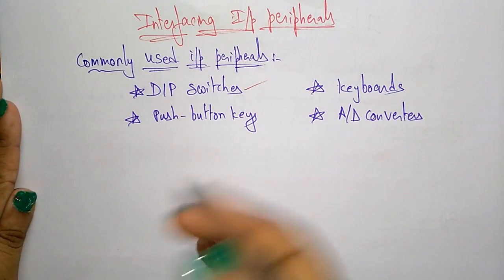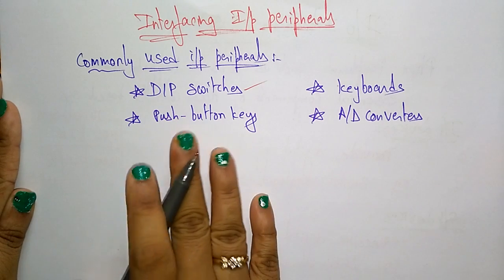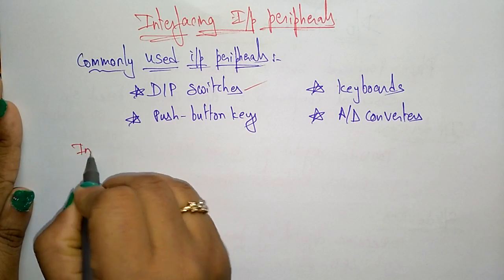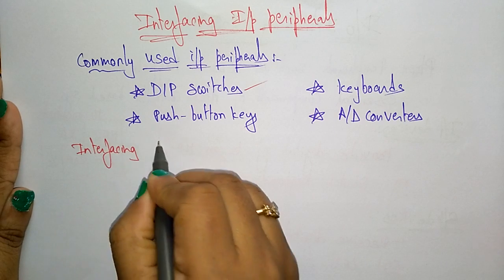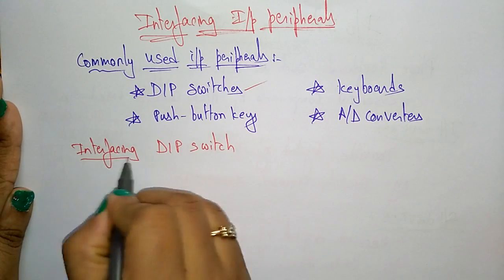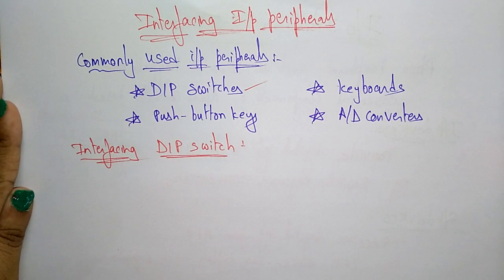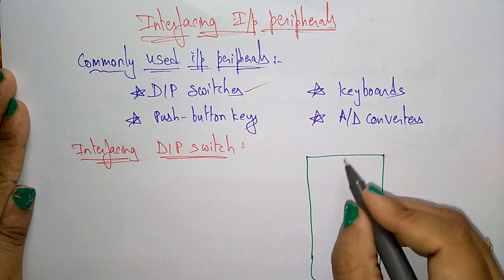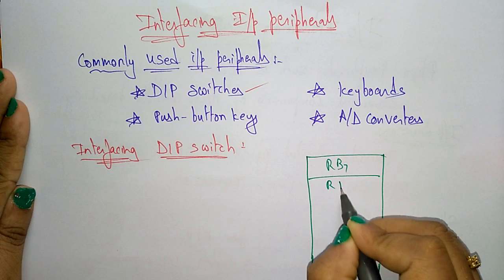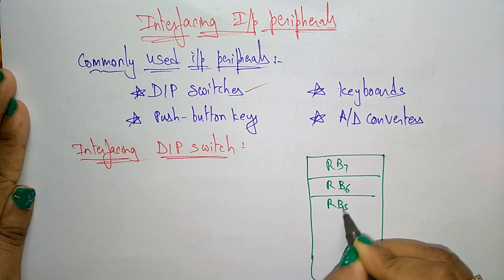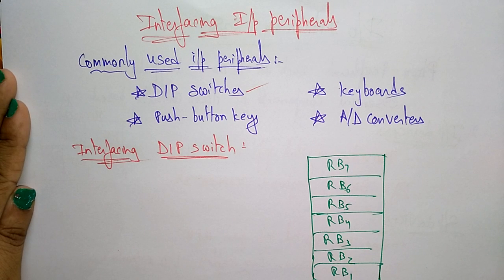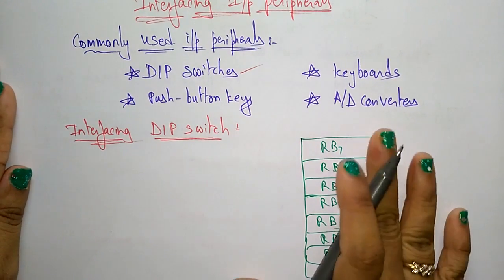Let us take the DIP switch and see how it will be interfaced to the IO port. For interfacing the DIP switch, the registers of port B are RB7, RB6, RB5, RB4, RB3, RB2, RB1, and RB0.